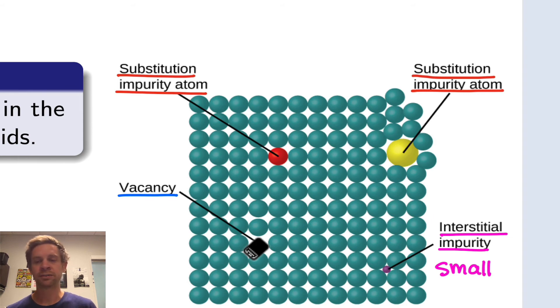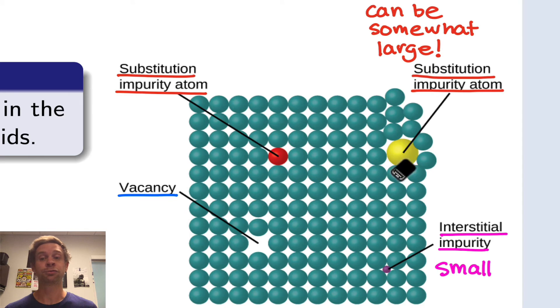However, substitution impurities can also be somewhat larger. And in this case, they have a big disruptive effect on the crystalline lattice in the vicinity of the impurity. So here, this yellow atom is much, much larger than the blue-green atoms, and we can see that it is disrupting the crystalline lattice profoundly around it. It's having very much a ripple effect on the atoms around it in the lattice.